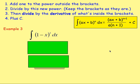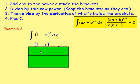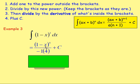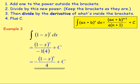Example 3: Integrate (1 − x)^3. First, add 1 to the power outside the brackets, giving (1 − x)^4. You then divide by that new power, so dividing by 4. You need to think about what's inside the brackets: 1 − x differentiates to give negative 1. Make sure you have that negative — so you divide by negative 1 as well. That gives you (1 − x)^4 divided by negative 4, plus c. You could put the negative to the side if you wish.